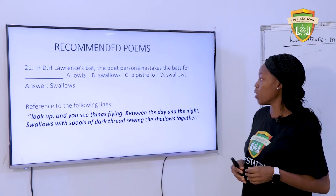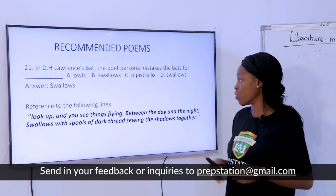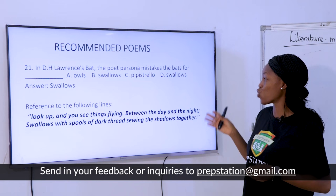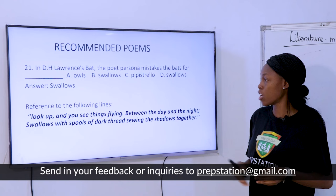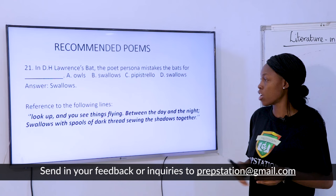In D.H. Lawrence's 'Bat,' the poet persona mistakes the bat for — A. Owls. B. Swallows. C. Pipistrelles. D. Swallows. The answer is swallows. With reference to the following lines: 'Look up and you see things fly between the day and the night. Swallows with spools of dark thread, sewing the shadows together.' So the persona initially mistakes what he sees for swallows.